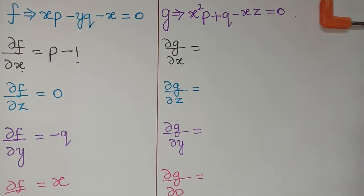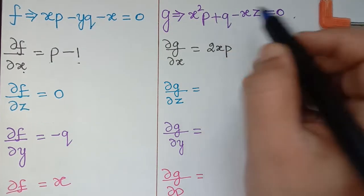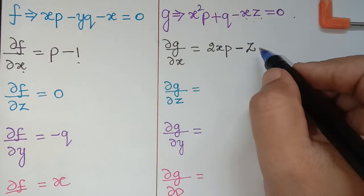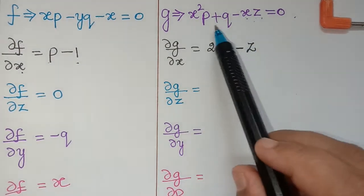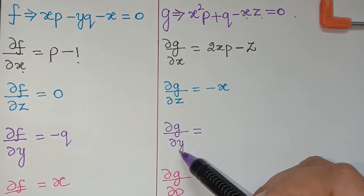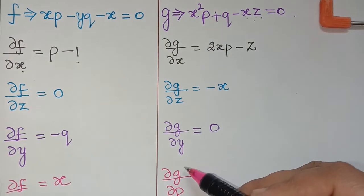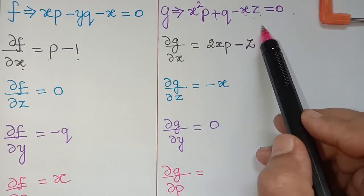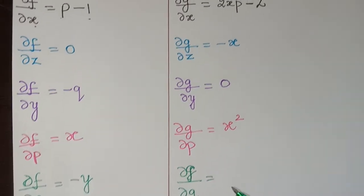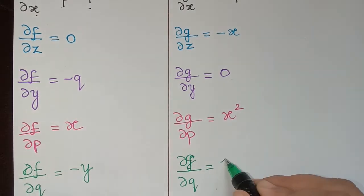Now we move to g. ∂g/∂x: differentiating x²p gives 2xp, and differentiating minus xz gives minus z, so ∂g/∂x = 2xp minus z. ∂g/∂z: the first two terms become 0 and differentiating minus xz gives minus x, so ∂g/∂z = minus x. ∂g/∂y: there is no y in g, so ∂g/∂y = 0. ∂g/∂p: differentiating x²p gives x², so ∂g/∂p = x². ∂g/∂q: differentiating q gives 1, so ∂g/∂q = 1.